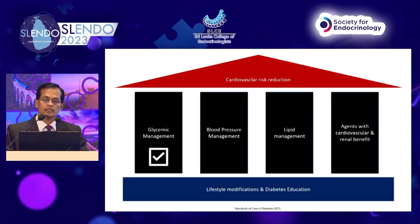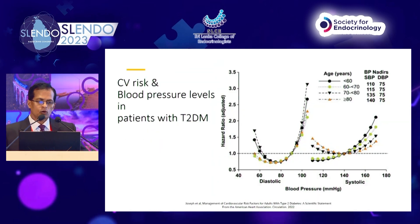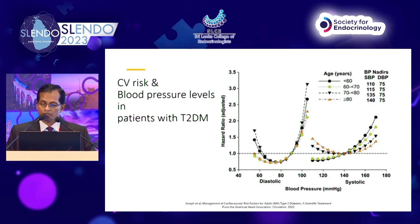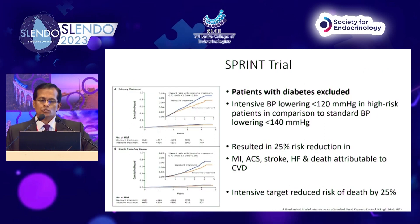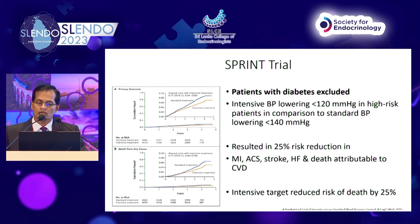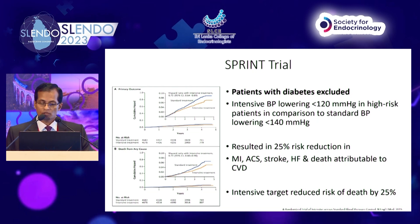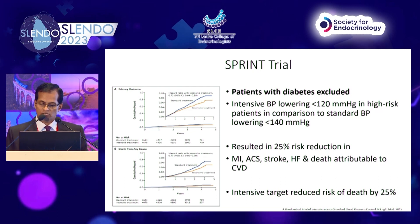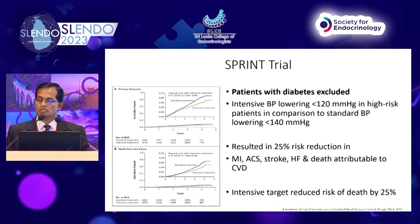Moving to blood pressure management: increasing diastolic and systolic blood pressure in type 2 diabetes both increase cardiovascular risk. Regarding the SPRINT trial — although diabetes patients were excluded — comparing systolic blood pressure of 120 versus 140 resulted in a 25% reduction in coronary disease, strokes, heart failure, and death attributed to CVD, and intensive targeting reduced risk of death by 25%. However, this was a non-diabetic population.